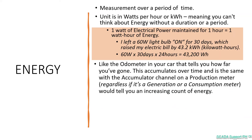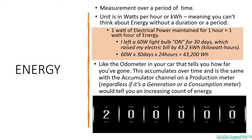Like the odometer in your car, energy works in a similar fashion as it tells you how far you've gone. This accumulates over time, and it's the same with the accumulator channel on a production meter — whether it is a generation or a consumption meter — as it tells you the increasing count of energy.